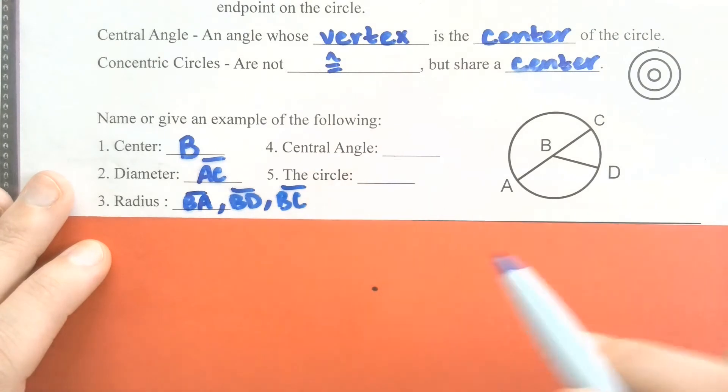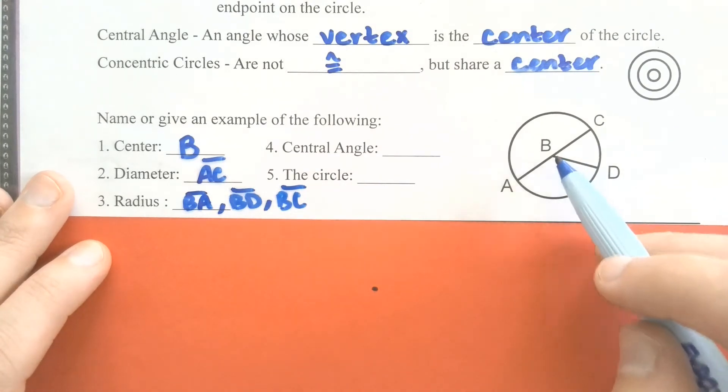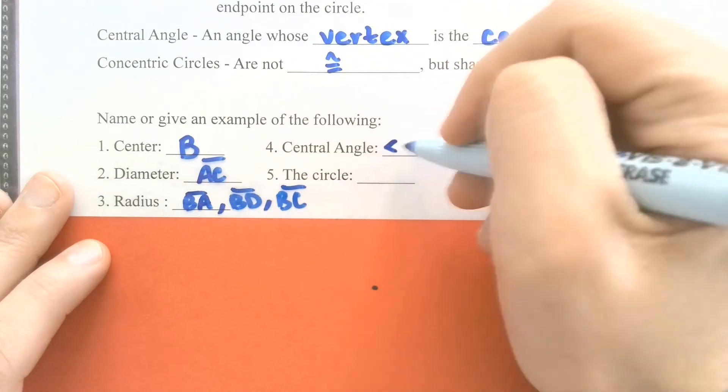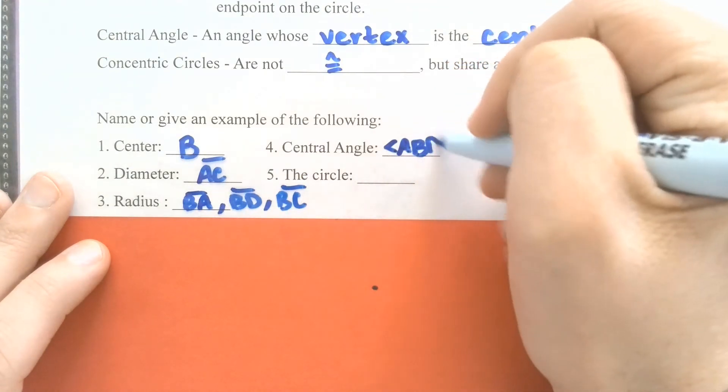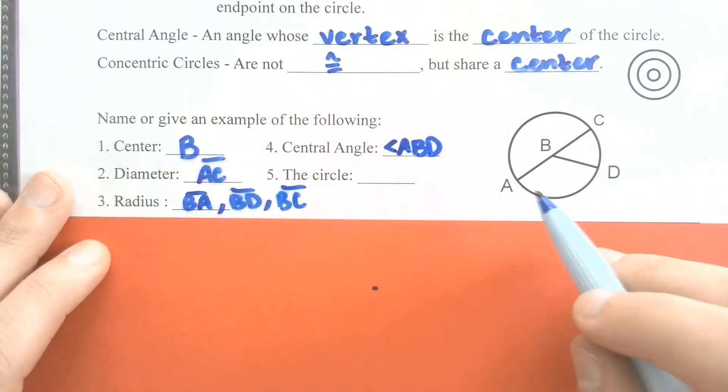For a central angle, same thing. We've got several that we can name here. As long as its vertex is the center of the circle, it is a central angle. So angle ABD would be a central angle. I'm not going to name or list all of these, but we've got angle ABC would be a straight angle but still a central angle. Angle DBC is another angle we've got there.